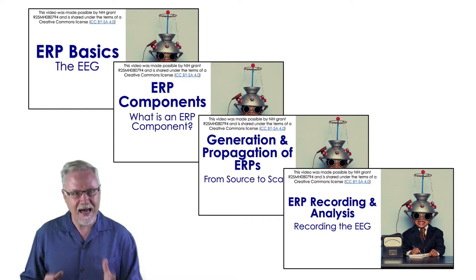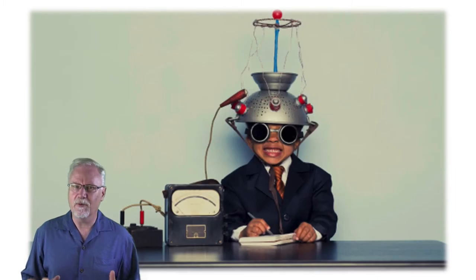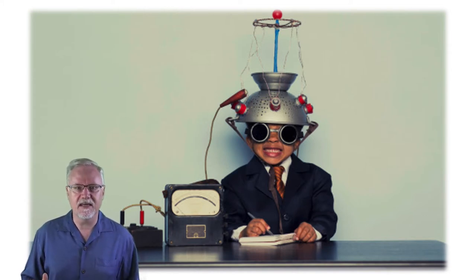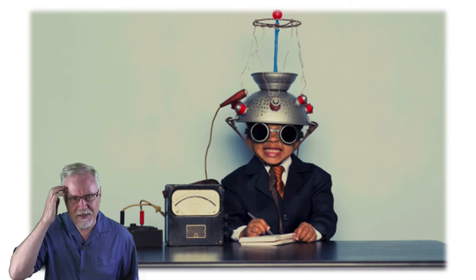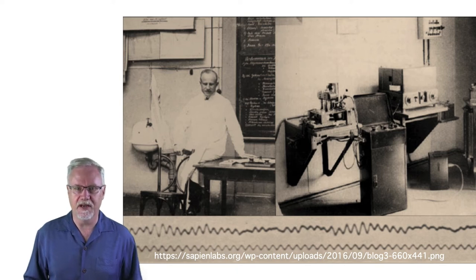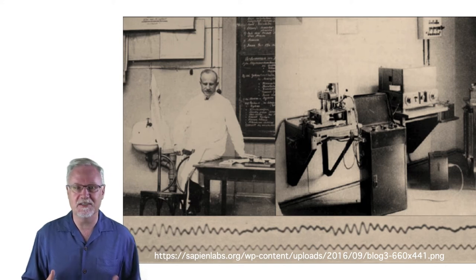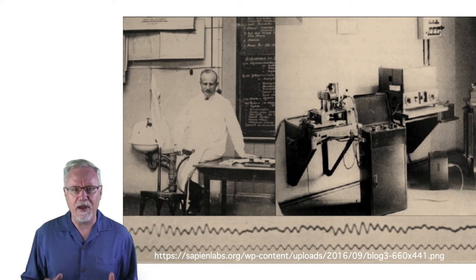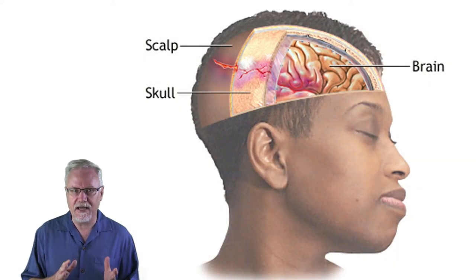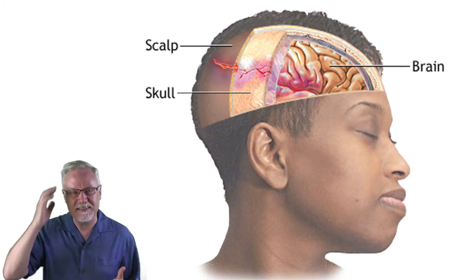Okay, enough background — it's time to dive in. Let's start with a completely crazy, preposterous idea: that it's possible to record meaningful brain activity from electrodes placed on the skin, with the skull separating the electrodes from the brain. A German psychiatrist named Hans Berger first recorded the EEG from the human scalp in the 1920s, but most neuroscientists thought he was crazy and just picking up random junk.